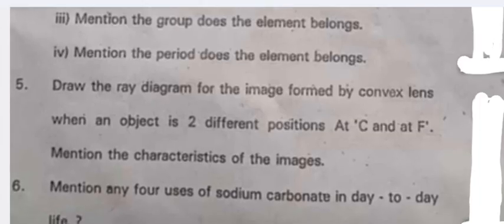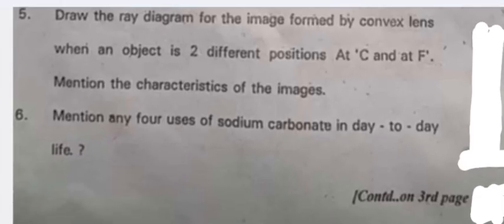Mention the period the element belongs. Fifth: Draw the ray diagram for the image formed by convex lens when an object is at two different positions, at C and at F. Mention the characteristics of the image.